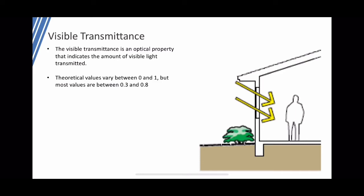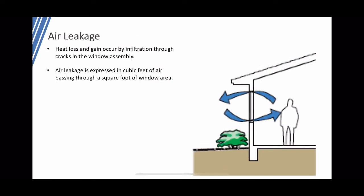Visible transmittance is an optical property indicating how much visible light passes through a window, with a theoretical range of 0 to 1 — typical values fall between 0.3 and 0.8. Air leakage refers to heat loss and gain by infiltration through cracks in the window assembly, expressed in cubic feet of air passing through a square foot of window area per minute.